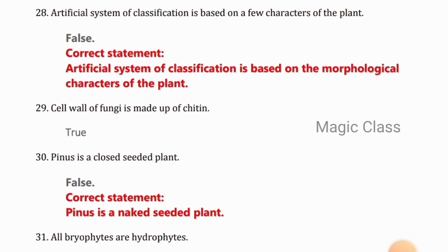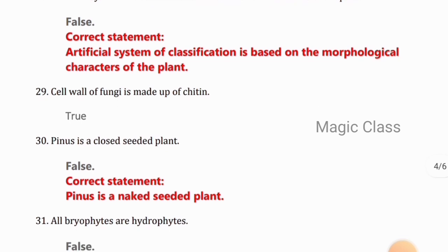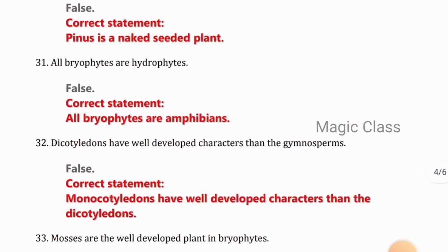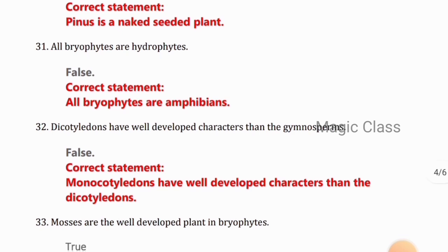Question 29: Cell wall of the fungi is made up of chitin. True. Question 30: Pines is a closed seeded plant. False, because it's a naked seeded plant. Question 31: All bryophytes are hydrophytes. False, because all bryophytes are amphibians. Question 32: Dicotyledons have well developed characters than the gymnosperms. False, because monocotyledons have well developed characters than the gymnosperm dicotyledons.